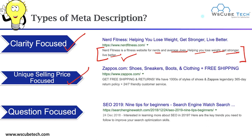Next we have USP-focused, that is Unique Selling Proposition focus. Your USP could be things like 'Get free shipping and returns,' '24/7 customer service,' or '365-day return policy.' In case of USP-focused meta description, you focus on highlighting your USP. Next we have question-focused meta description — just to attract visitors, you can ask a question to your user, like 'Interested in learning more about SEO in 2019? Here are the key trends you need to improve your search optimization.' By using this type of question, you can create an engaging meta description.